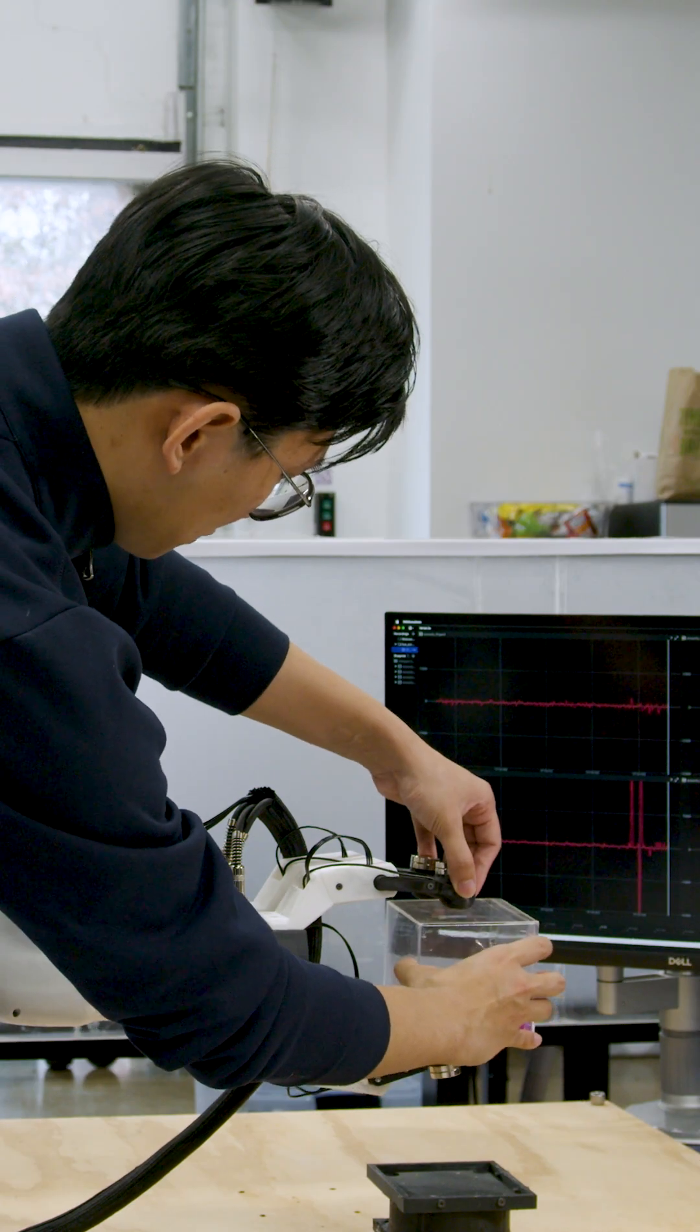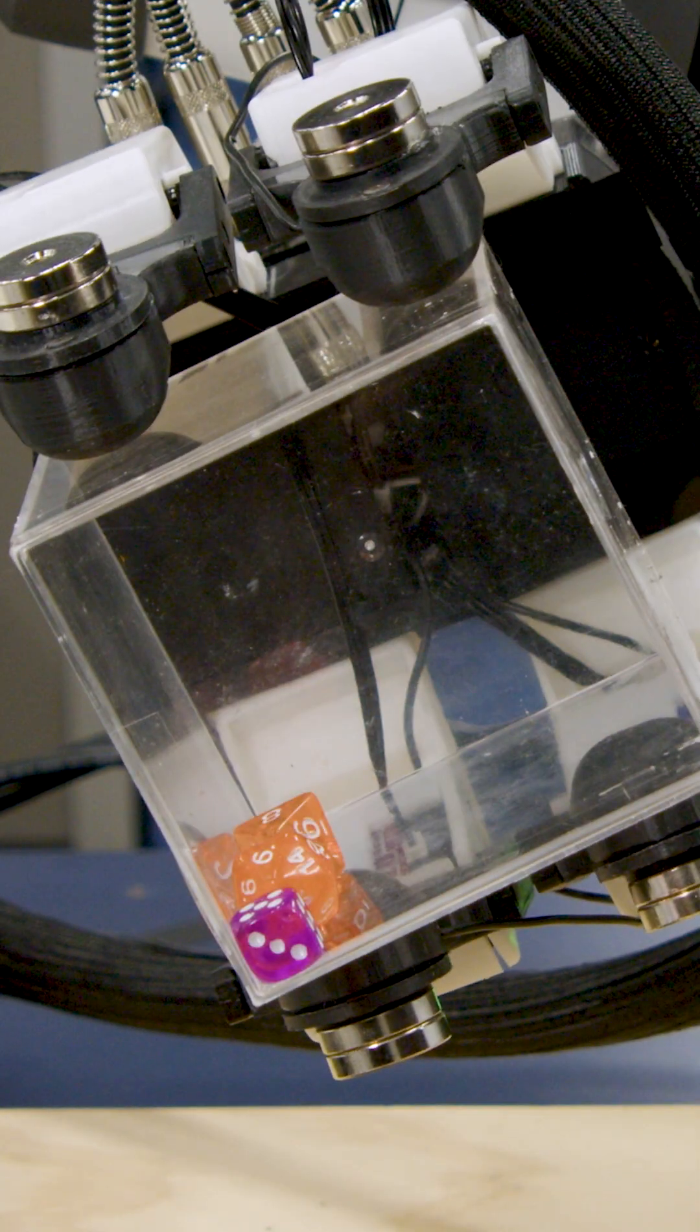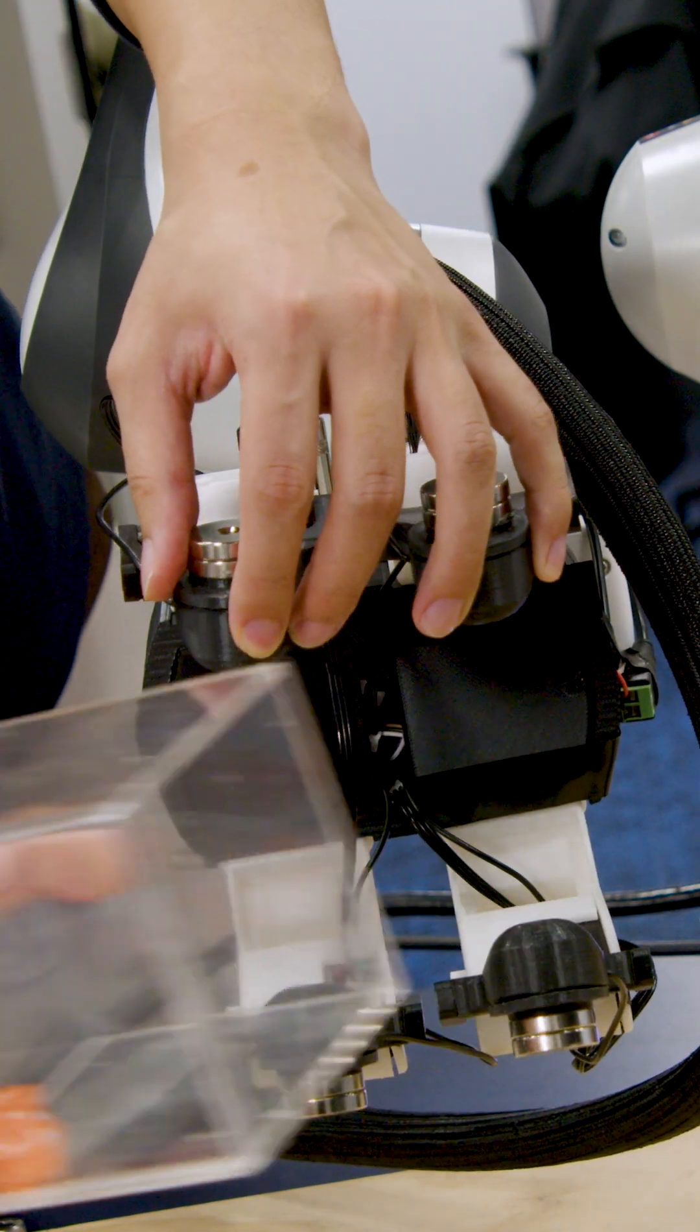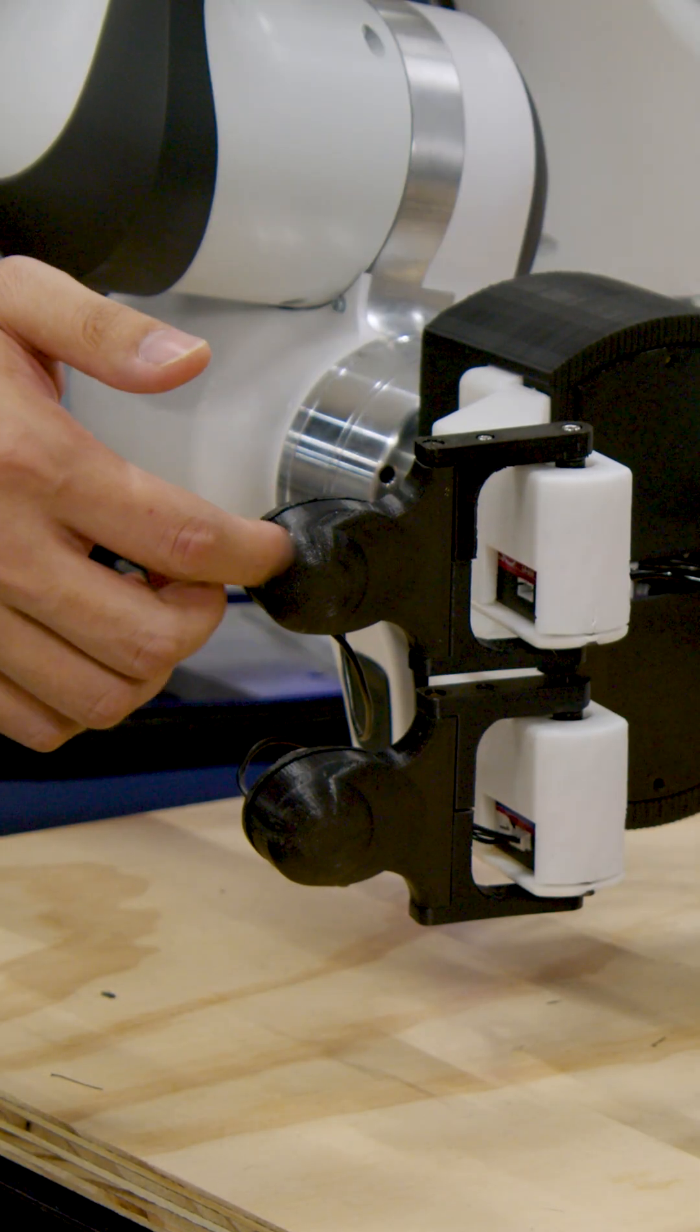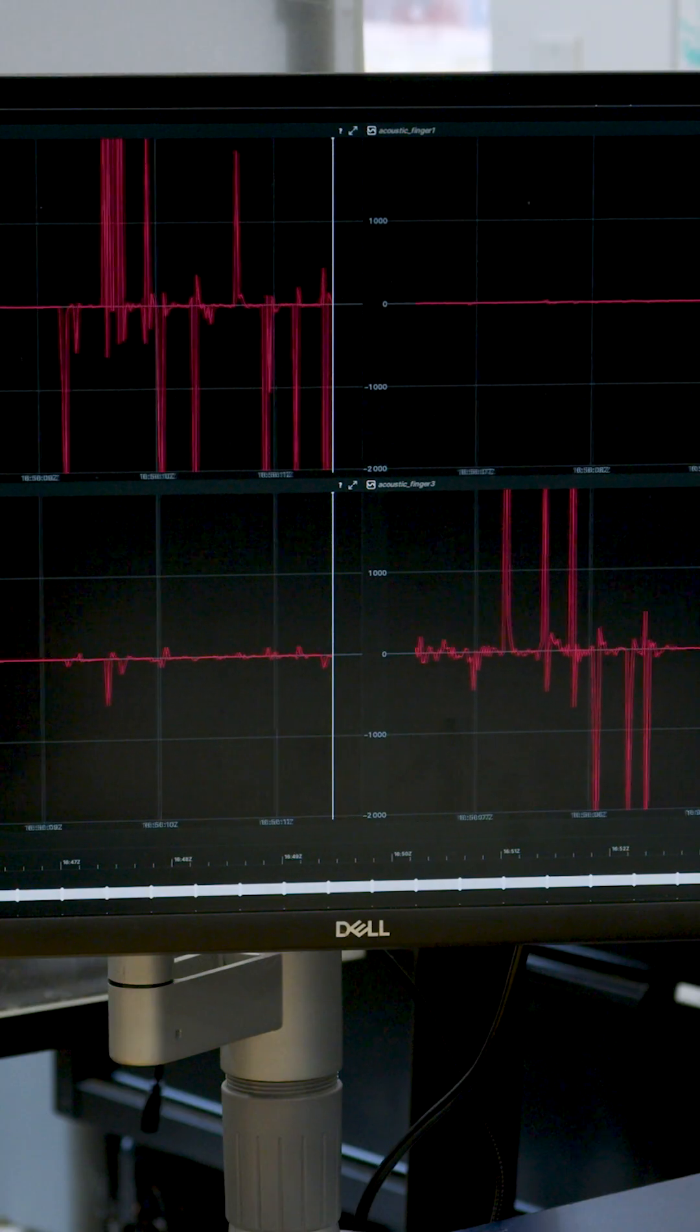SonicSense is a robot that can sense the environment with acoustic vibrations. The main components are the robot gripper, the contact microphones embedded in each finger, and the integrated AI system that perceives vibration signals.